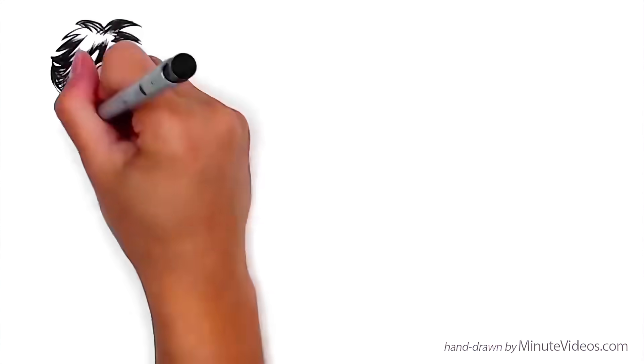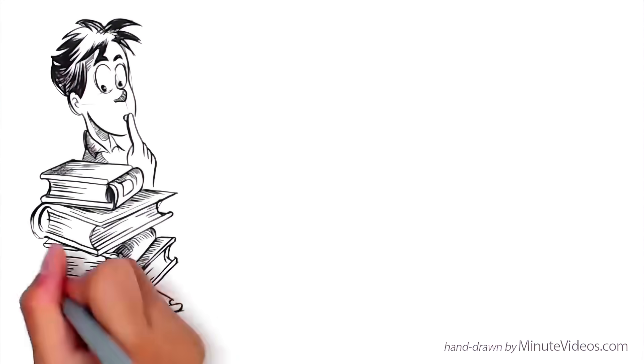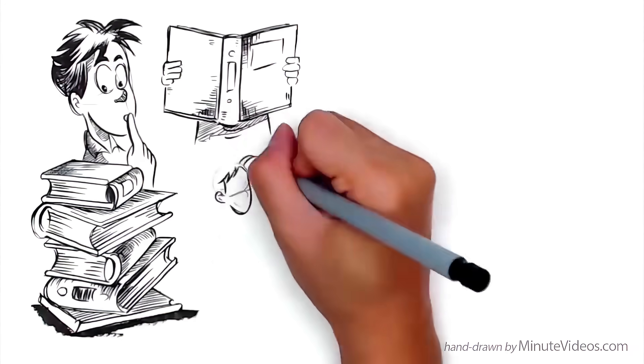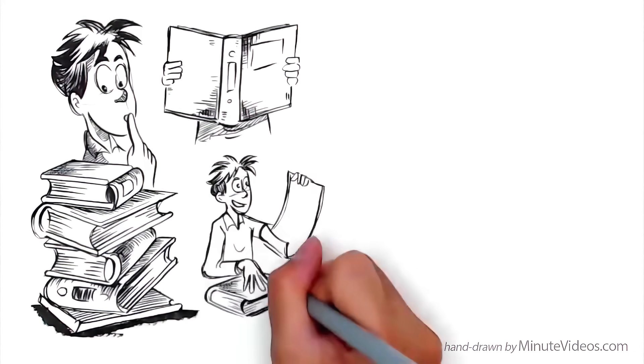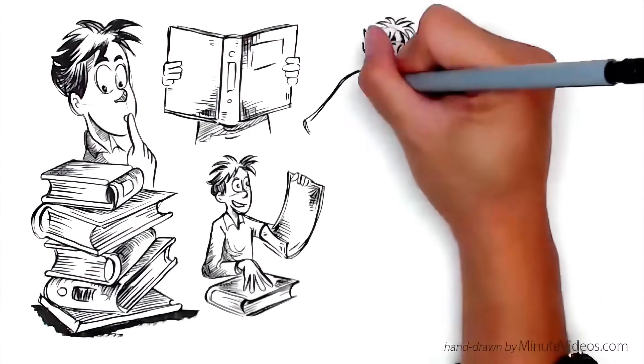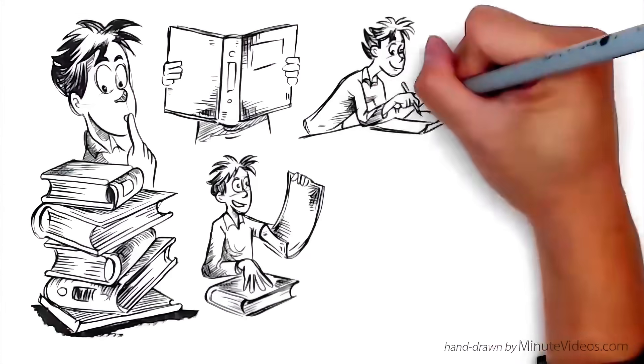The first step is to pick a topic you want to understand and start studying it. Once you know what it is about, take a piece of paper and write about it, as if you're teaching the idea to someone else.